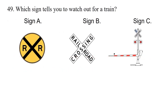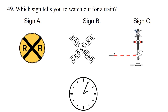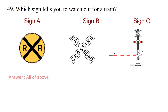Question: Which sign tells you to watch out for a train? Option 1: Sign A. Option 2: Sign B. Option 3: Sign C. The answer is all of the above.